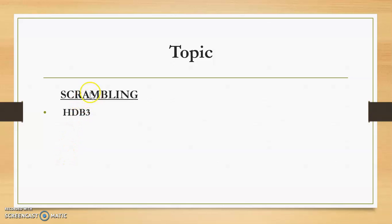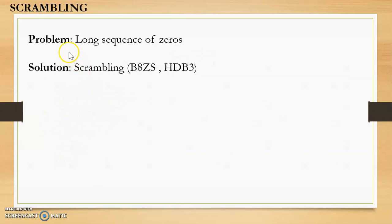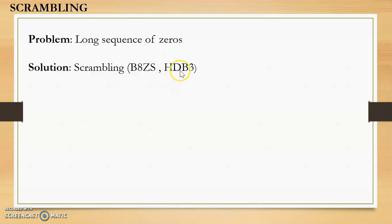In this video we will discuss one of the scrambling techniques, which is HDB3. As discussed in the previous video, scrambling is used to solve the problem of long sequences of zeros. There are two methods in scrambling: one is B8ZS, which we discussed in the previous video, and the second one is HDB3.